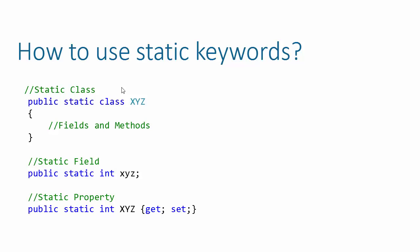Here are some examples showing the usage of the static keyword. The static keyword is placed between the access modifier and the class keyword, which makes the class static. Similarly, if you want to create a static field or static property, you use the static keyword in the same fashion.